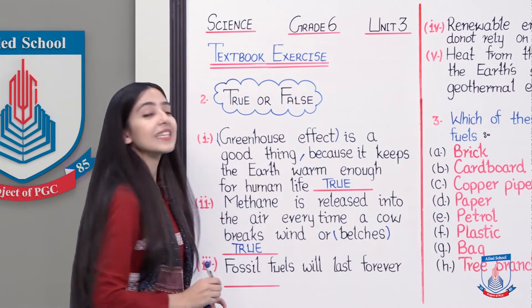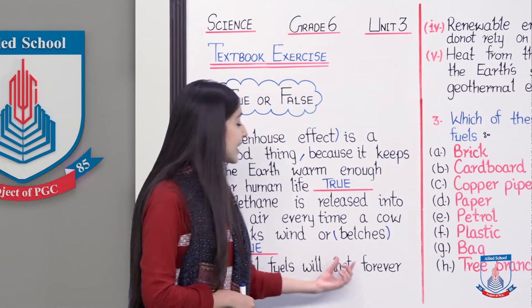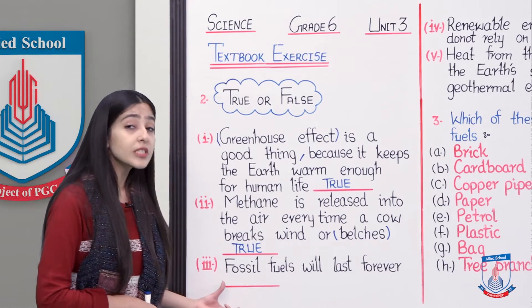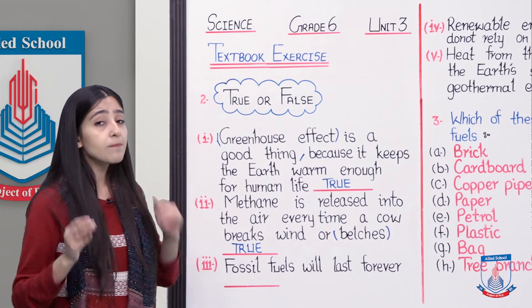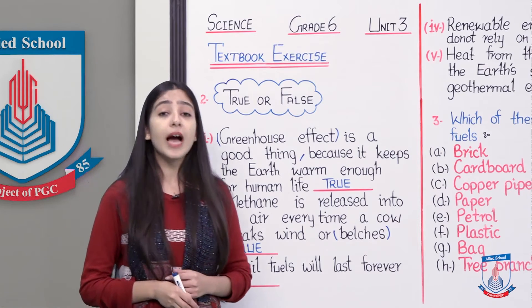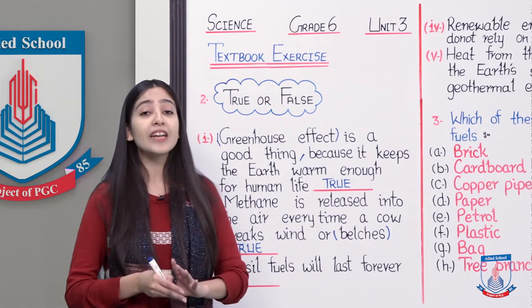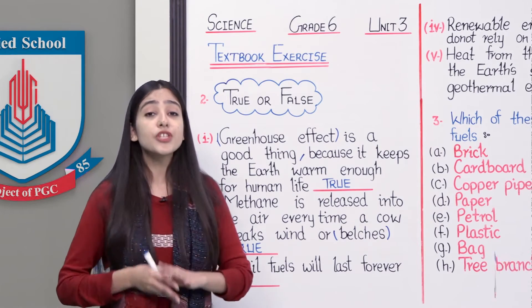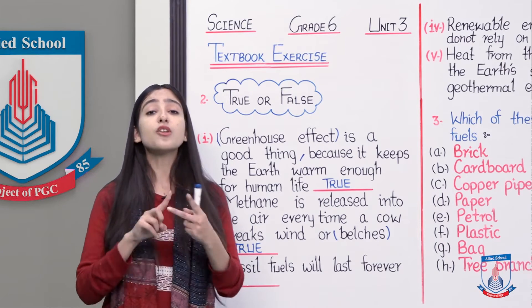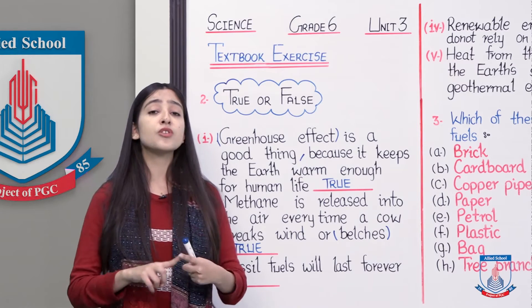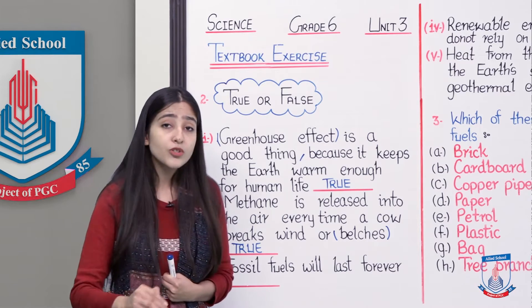Moving to statement number three: 'Fossil fuels will last forever.' This means fossil fuels will always remain with us. Is this statement correct or incorrect? First, let me remind you of the major concept from this chapter about energy sources. There were two types: renewable and non-renewable. Non-renewable energy sources are those which, if we keep consuming, will eventually run out from this world with the passage of time.